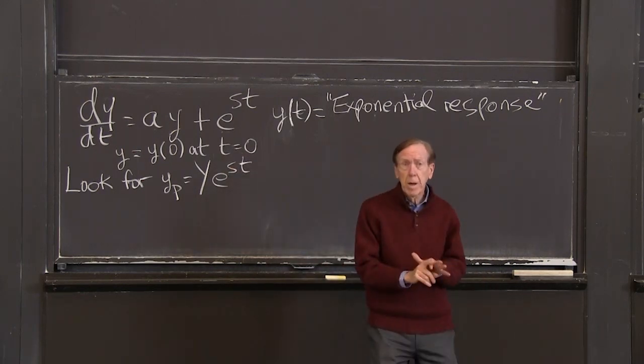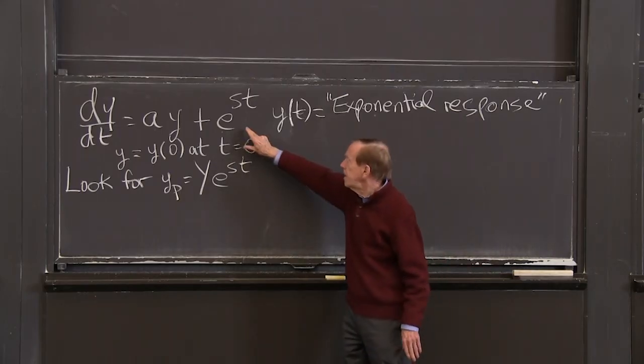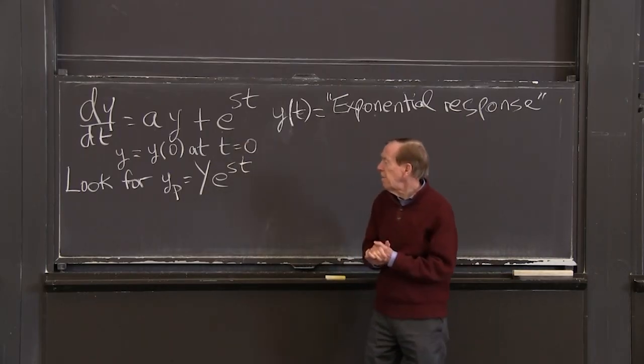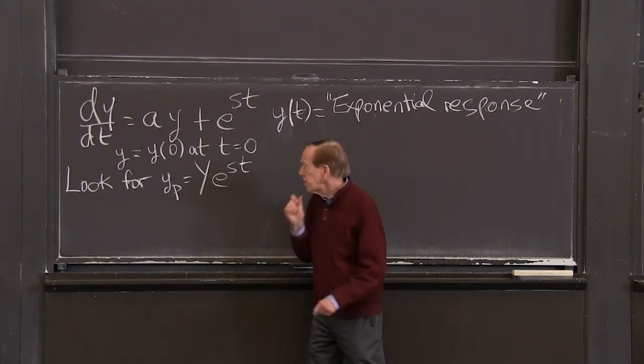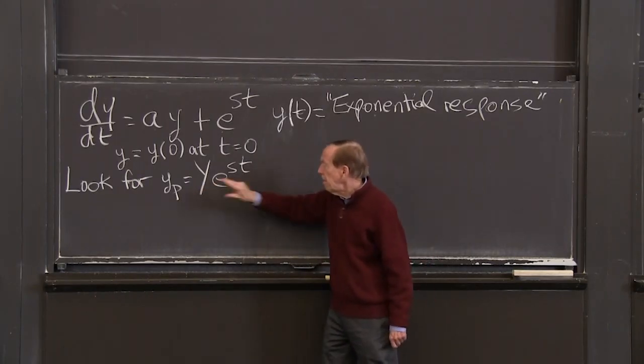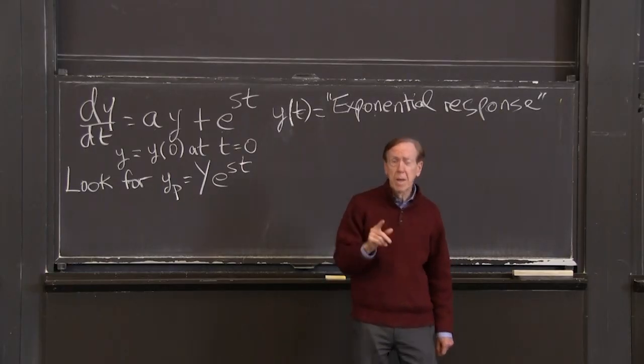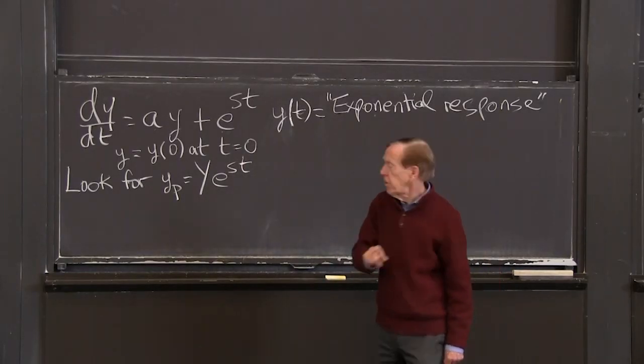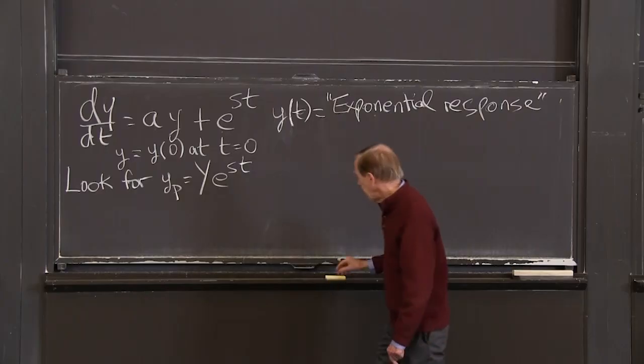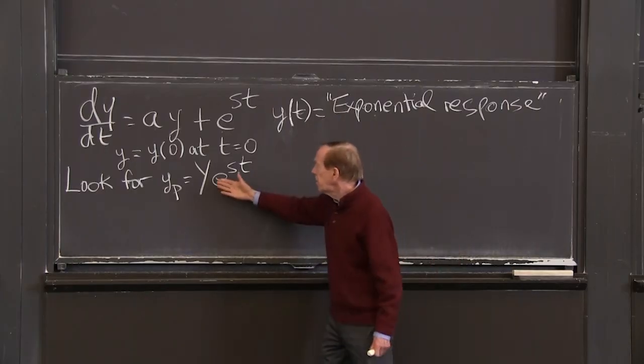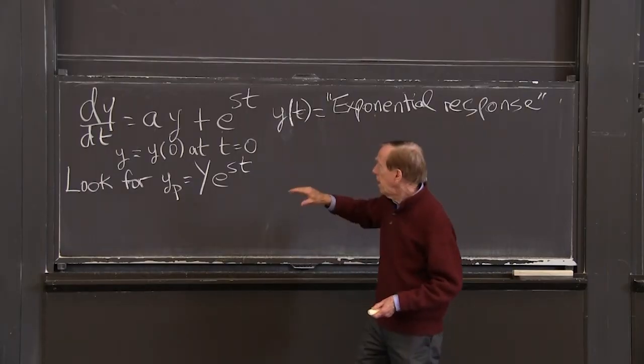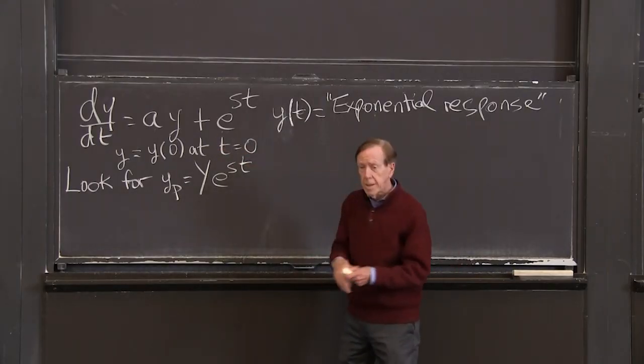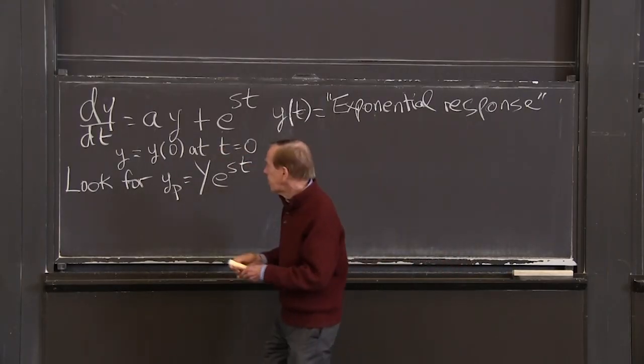Here's the key point: that with this nice source function, the solution, or one solution, a particular solution, will be just a multiple of e^(st). So all I have to do is find that number capital Y, and I've got a solution to that equation. How do I do it? Substitute this into the equation and solve for Y. So let's do that.